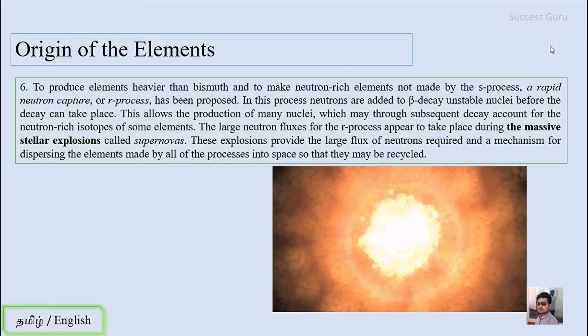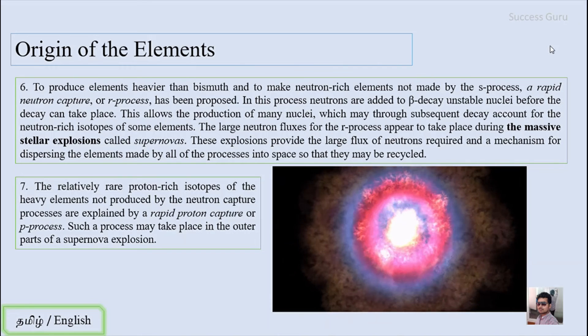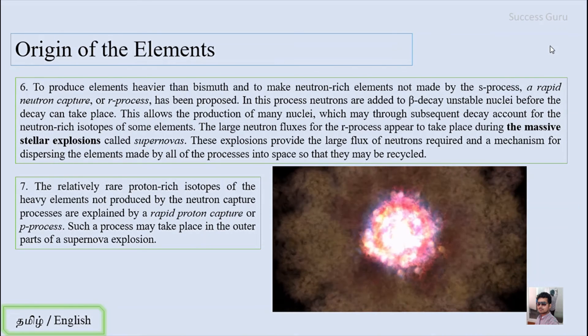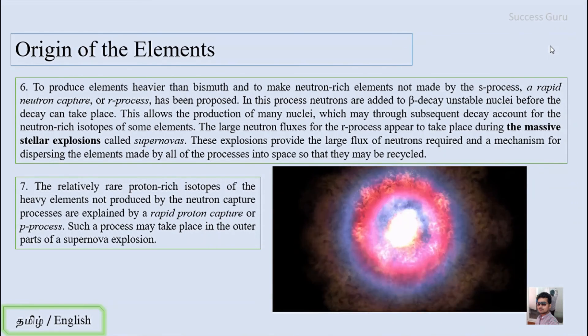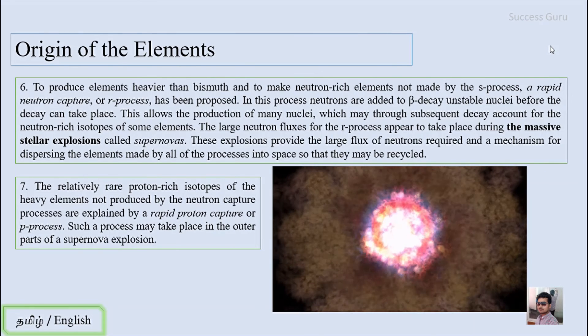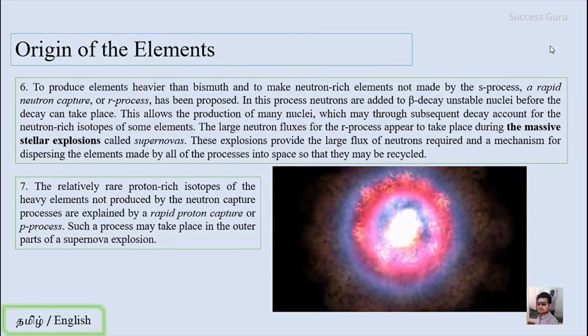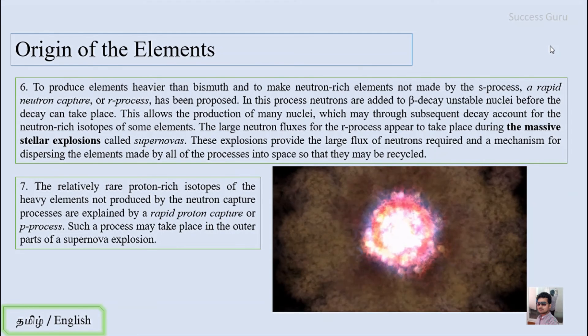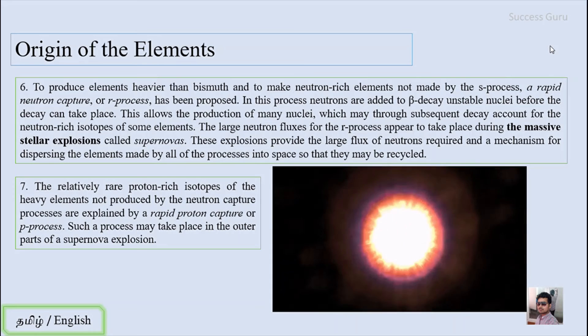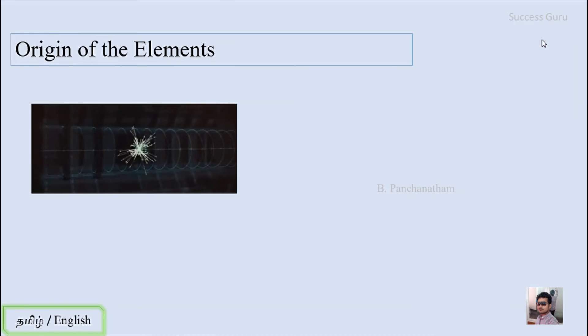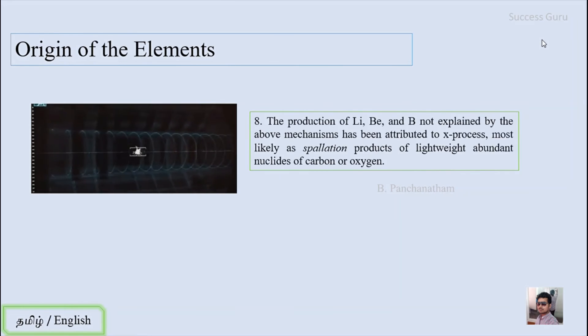The next process involves relatively rare proton-rich isotopes of heavy elements not produced by neutron capture. This is explained by rapid proton capture, or p-process. Such a process may take place in the outer part of supernova explosions. The last process, which explains the formation of lithium, beryllium, and boron not explained by the above mechanisms, has been attributed to the x-process, most likely a spallation process in which two nuclei collide to form a newer one, that could be like carbon or oxygen.